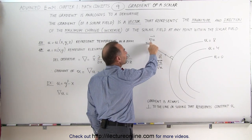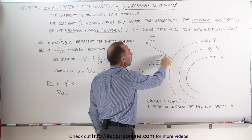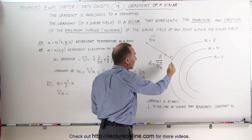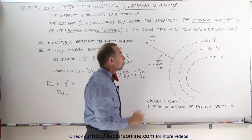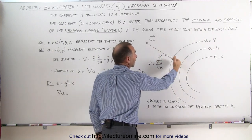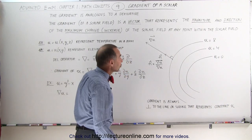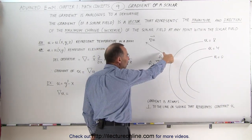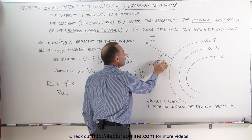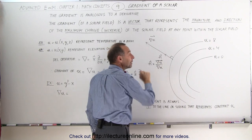If I want to know the maximum change at a particular location and the direction of that, I can represent it by a vector quantity defined by the gradient of that scalar field. This is the symbol we use for that. The gradient of the field is a vector quantity that represents the magnitude and direction of the maximum increase in the field. The unit vector in that direction can be obtained by taking the gradient vector and dividing it by its magnitude.